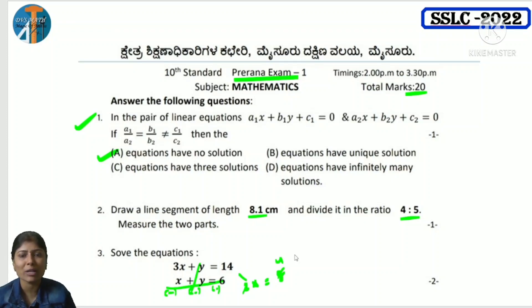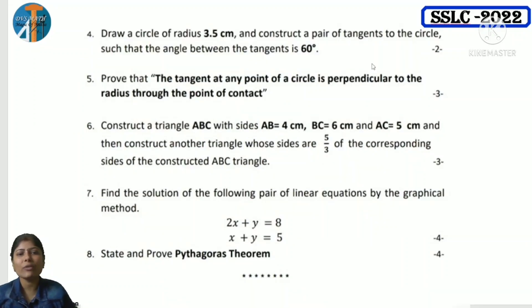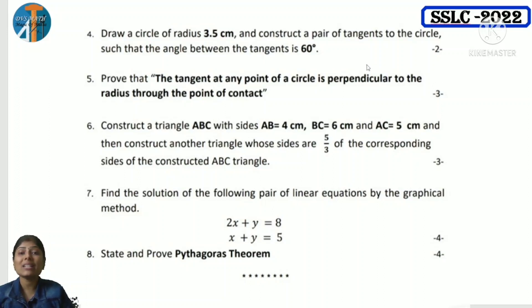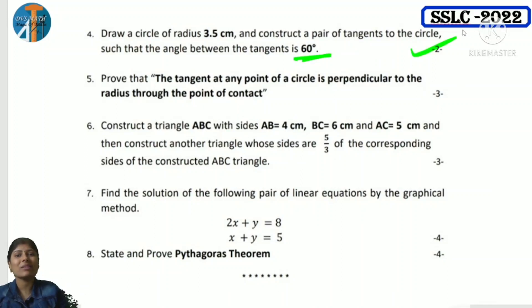Fourth question: draw a circle of radius 3.5 cm and construct a pair of tangents to the circle such that the angle between the tangents is 60 degrees. This angle-between-tangents construction — I have already explained this in the construction lesson. Please refer to that.